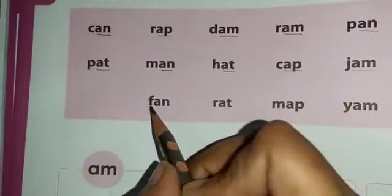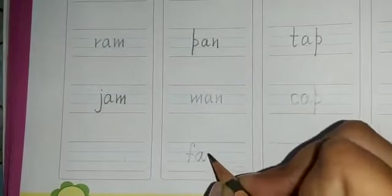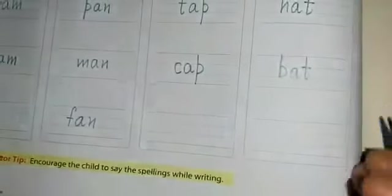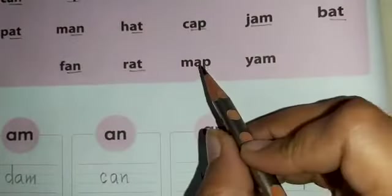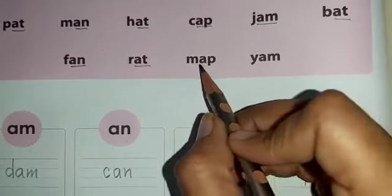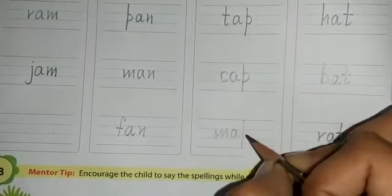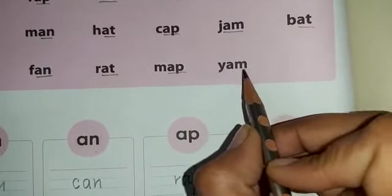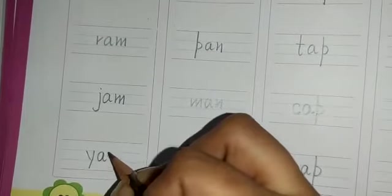Now the next one: F-A-N, fan. This is an AN cluster word, so let's write it down here. Fan. Now the next one: R-A-T, rat. This is an AT cluster word, so we will write this down under AT. Rat. Next: M-A-P, map. This is an AP cluster word, so we will write this down under AP. Map. And the last one: Y-A-M, yam. This is an AM cluster word, so we will write this down under AM. Yam.